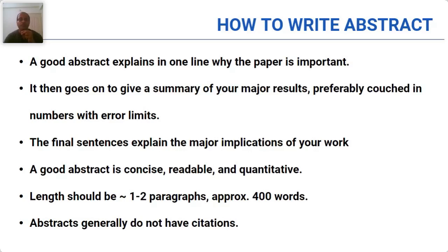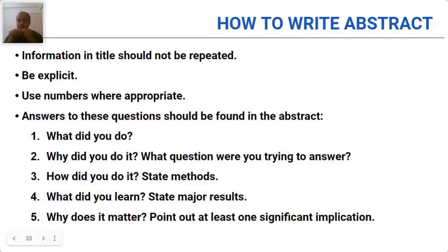Here are the points to keep in mind when writing the abstract. Information in the title should not be repeated in the abstract. Use numbers wherever appropriate so that it signifies your research. The following set of questions needs to be answered in the abstract: What did you do? What was the purpose of your research? What is the question you are trying to answer? What methods have you used in brief? What are the major results obtained? And what is the significant implication of the study? If you have more than one significant implication, you can include all, but at least one significant implication should be present.